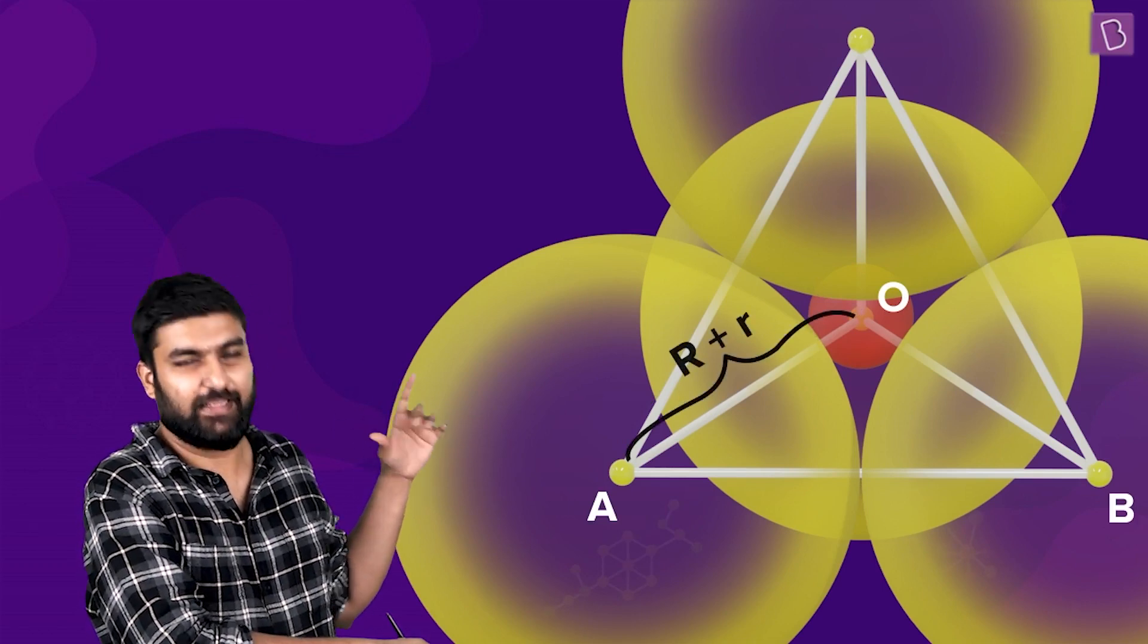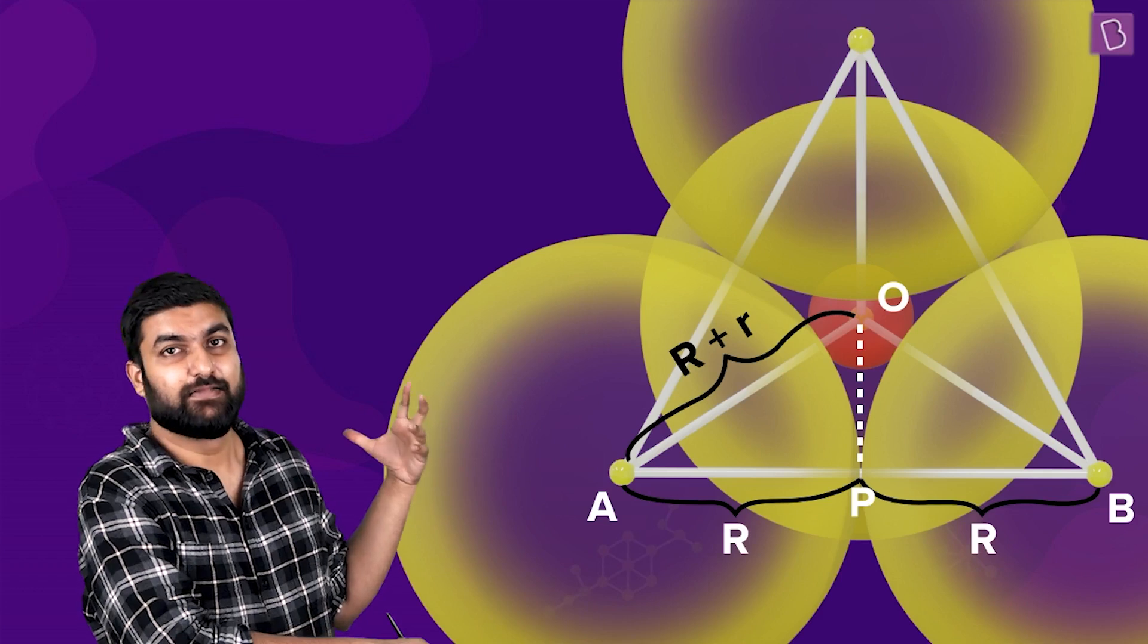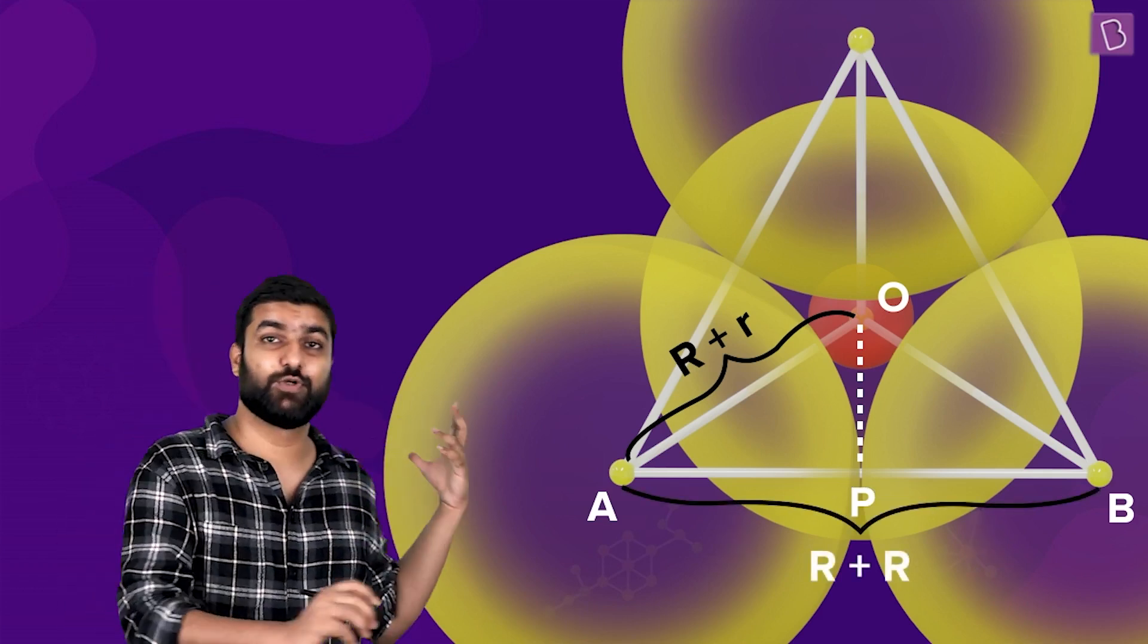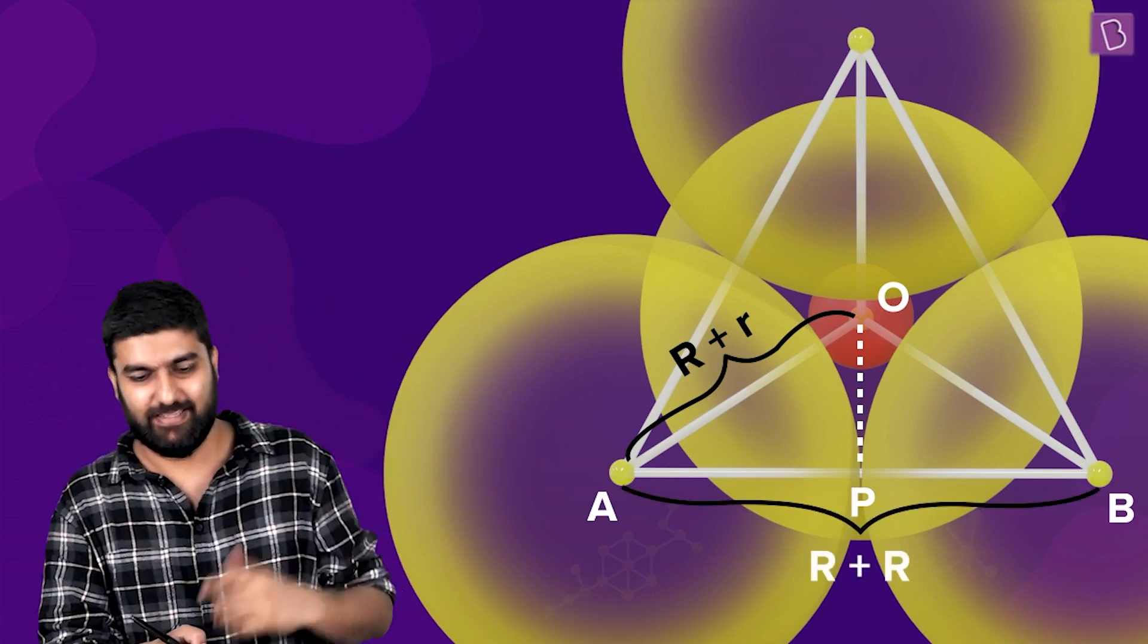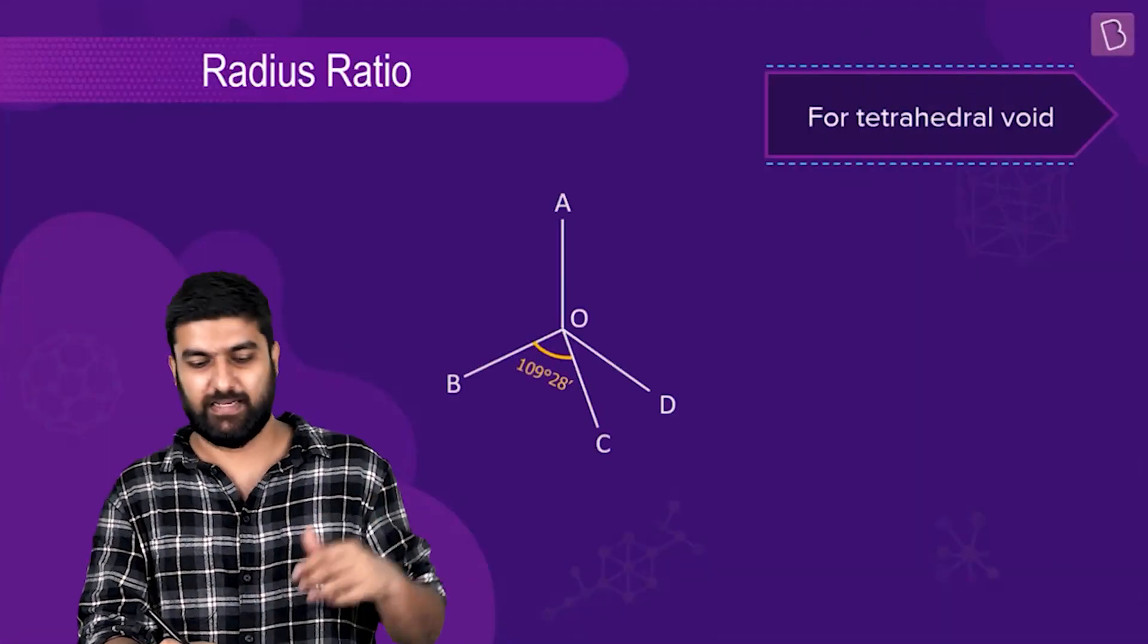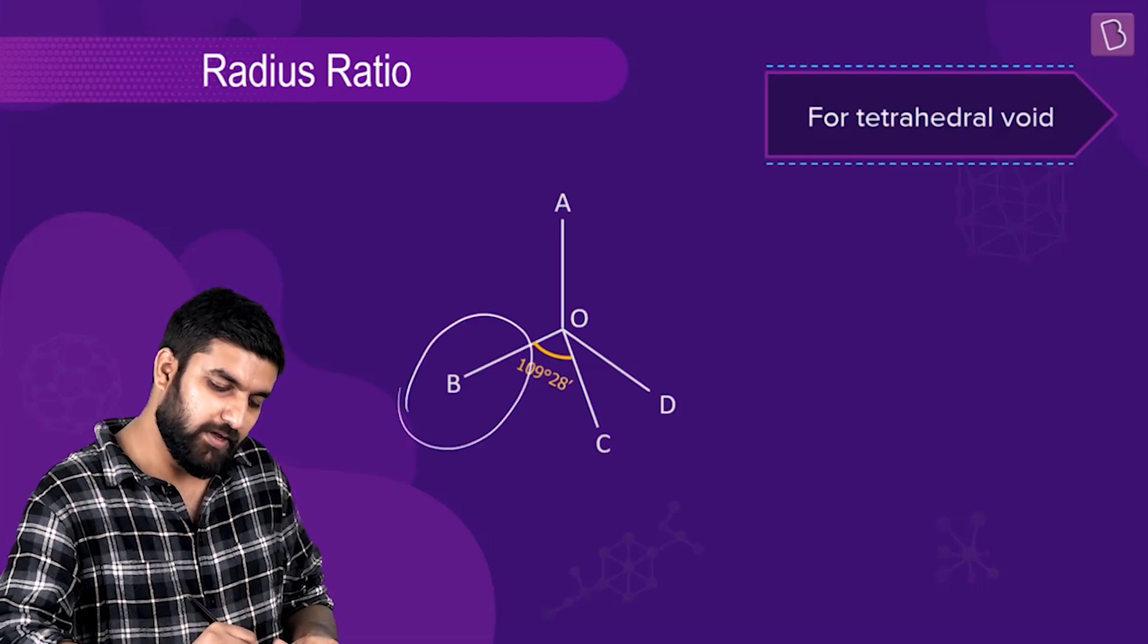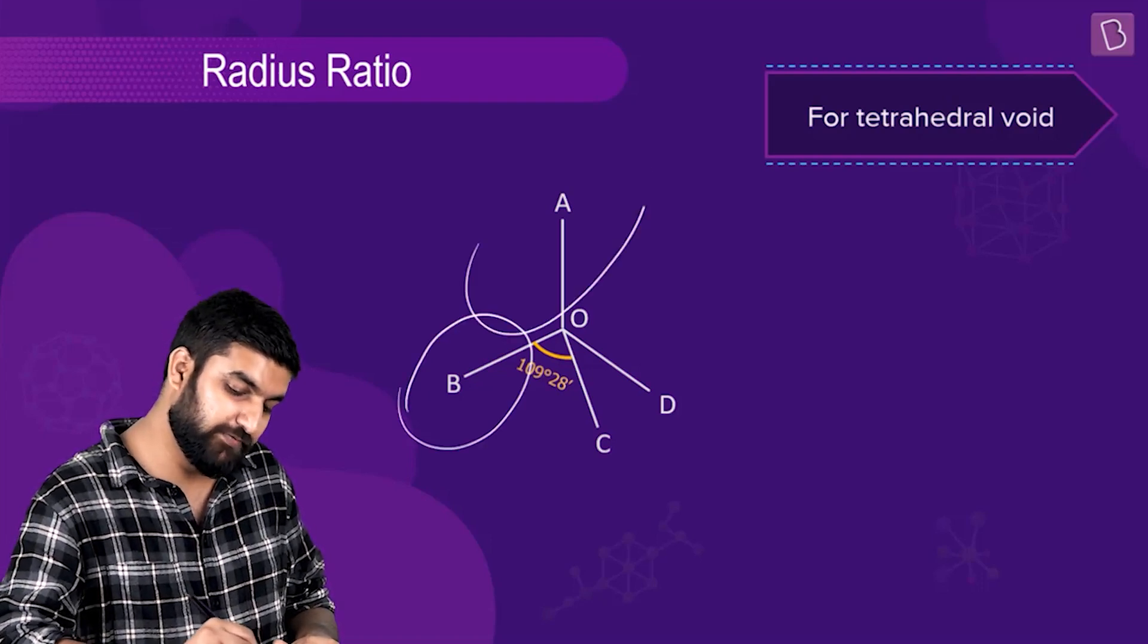So some of the edge lengths will become equal to 2R directly. We have something like this. If you realize, you have a yellow sphere here, a yellow sphere here, and they will be in touch with each other.